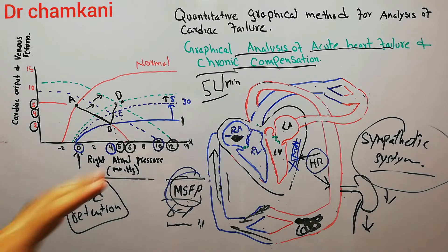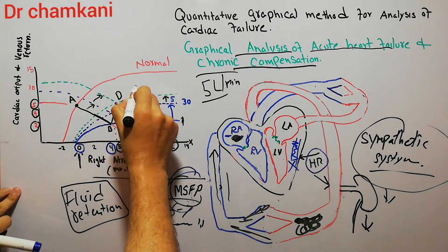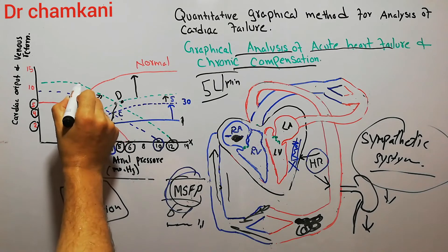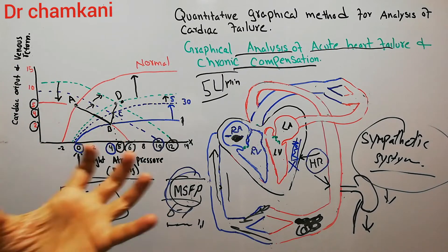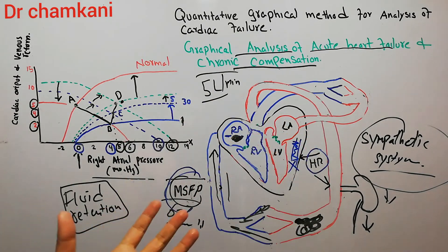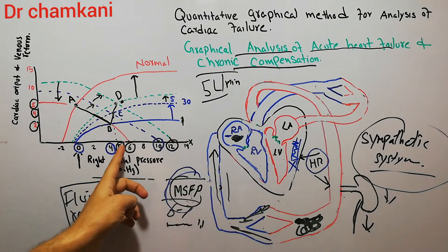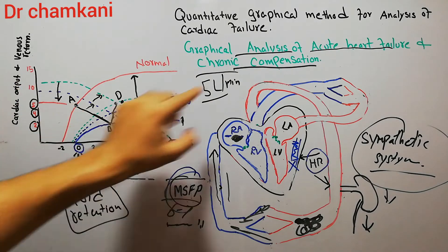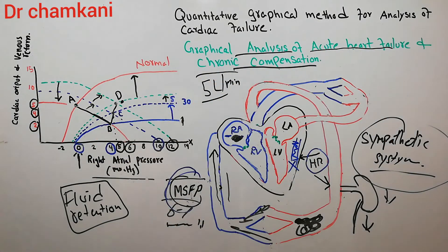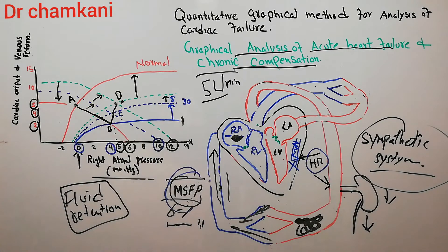With further treatment and recovery of heart function, the cardiac output curve can shift further upward back to normal, and the venous return curve can shift downward and leftward, with both curves meeting again at normal operating points. Whether full recovery occurs depends on the type of injury. If the injury cannot recover completely, the normal cardiac output may be maintained only at the expense of increased mean systemic filling pressure and increased right atrial pressure.